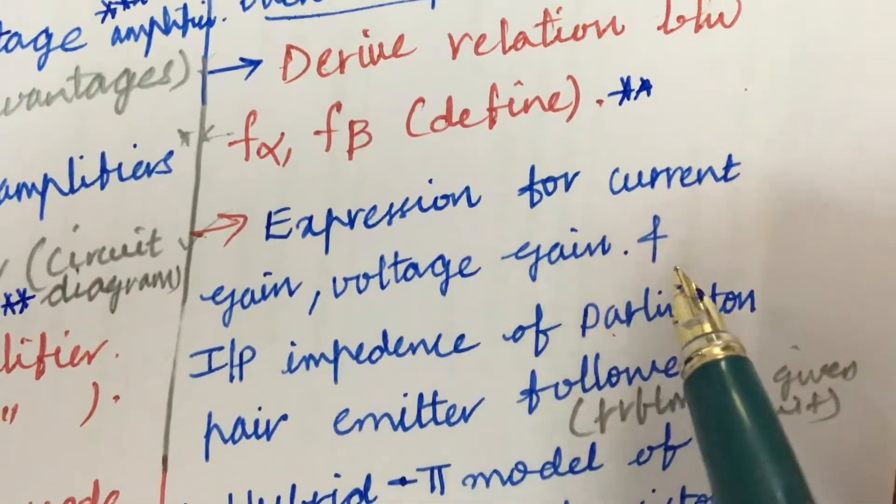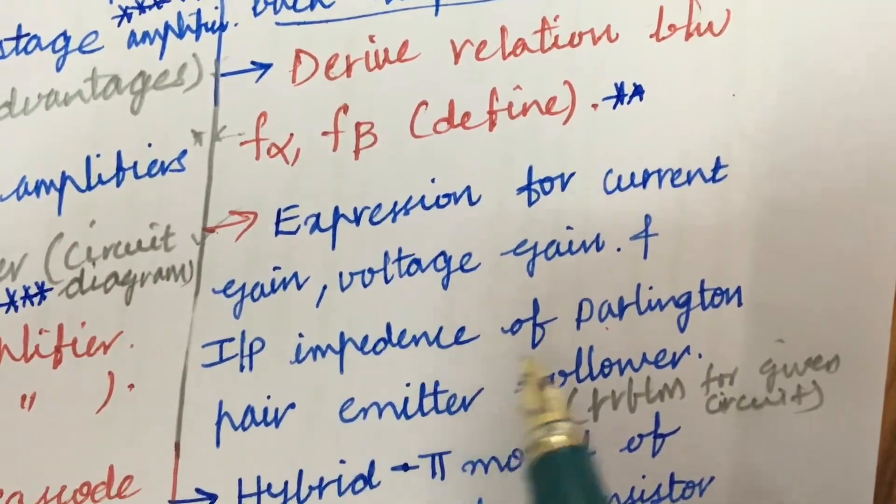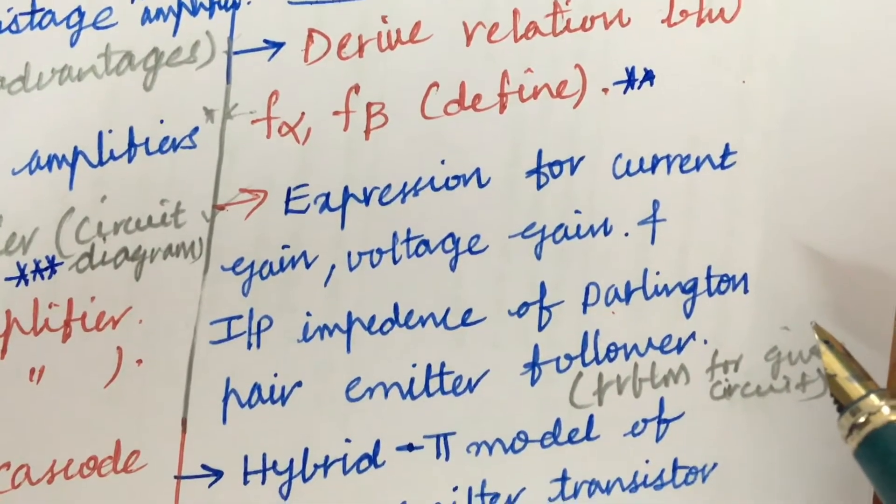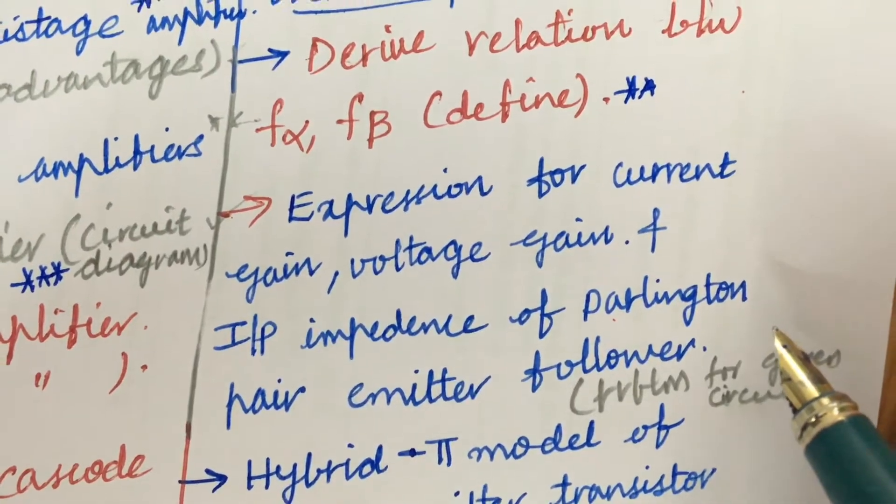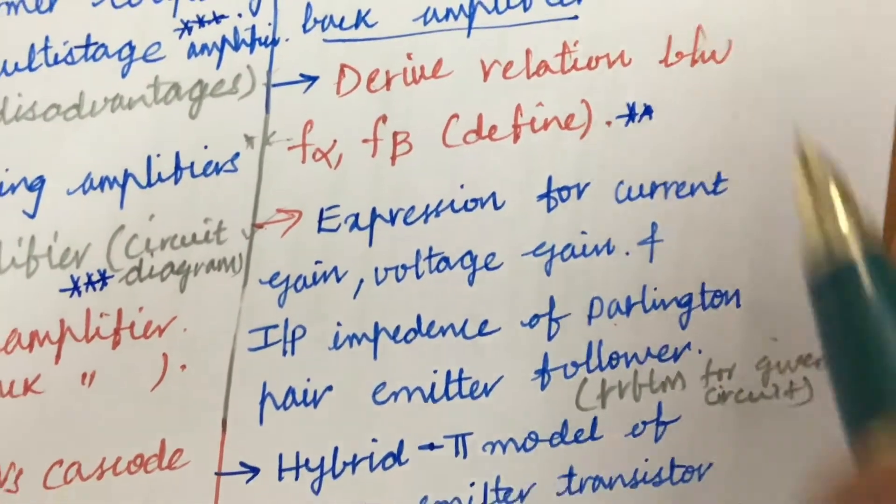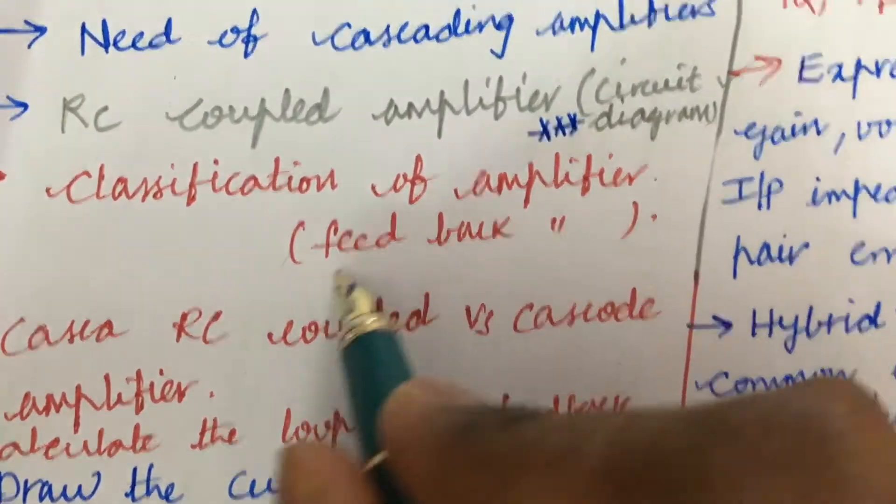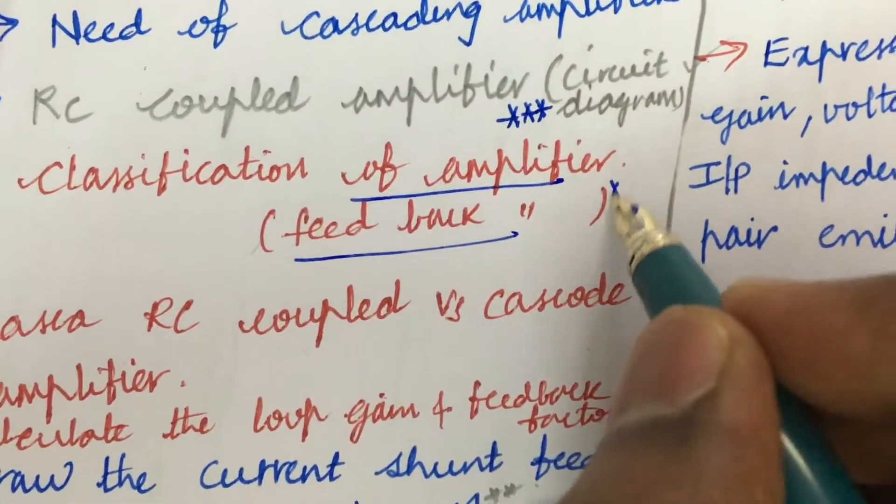RC coupled amplifier along with the circuit diagram is also one of the gunshot questions. Expression for current gain, voltage gain, as well as input impedance of a Darlington pair emitter follower is given in the third question in few question papers. That is the reason I have taken into consideration putting together all the questions here. Classification of amplifiers and the feedback amplifier - based on these two you will be getting one question for sure.